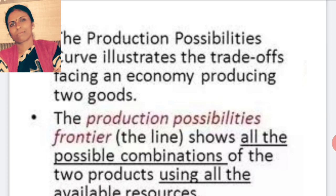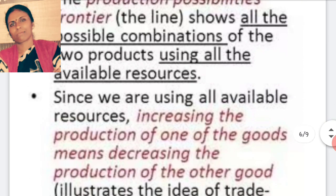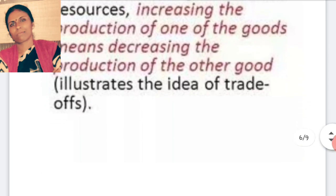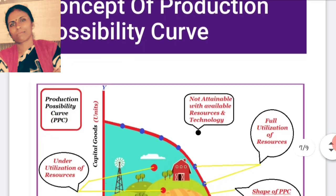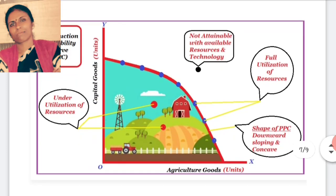Two commodities are given and many possibilities are there. Let us try to understand the concept of production possibility curve with this picture. On OX, capital goods are measured and on OY, agricultural goods are measured. The production possibility curve is given here, and four symbolic terms are given: underutilization of resources, full utilization of resources, not attainable with the available resources and technology, and the shape of the production possibility curve — downward sloping and concave.